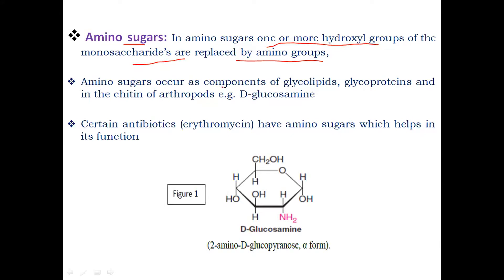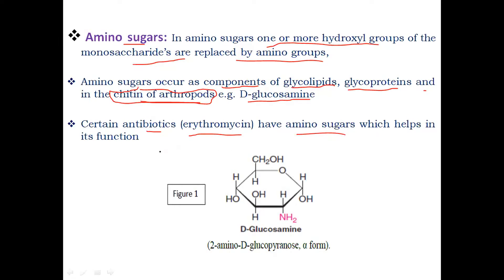Amino sugars occur as components of glycolipids (when lipids and carbohydrates combine), glycoproteins (when carbohydrates and proteins combine), and in the chitin of arthropods — chitin is present in the exoskeleton of arthropods, for example D-glucosamine. Also, certain antibiotics, for example erythromycin, have amino sugars which help in their antibiotic activity.